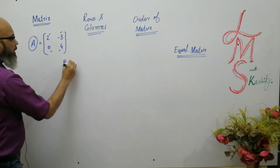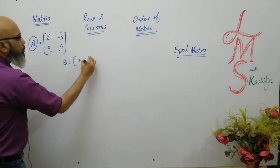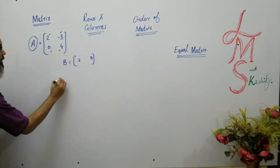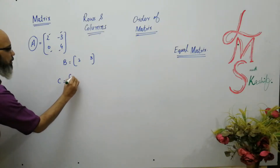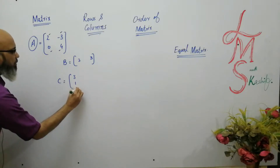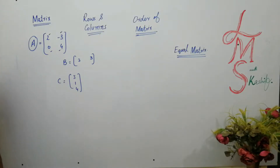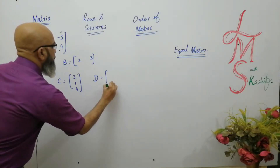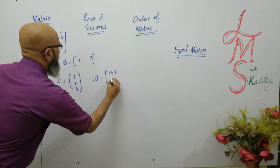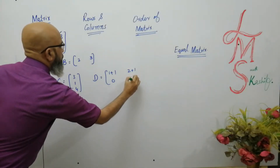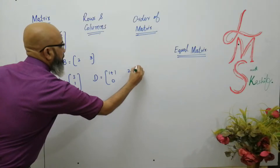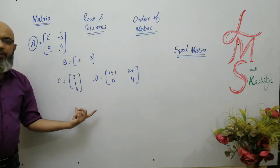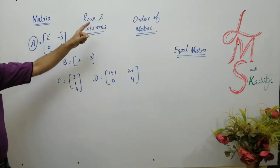Let's see some examples. Matrix B is equal to [2, 3] — this is also a matrix. Matrix C is equal to [3, 1, 4] — this is also a matrix. Matrix D is equal to [1+1, 0; 2+1, 4] — this is also a matrix. So these are different types of matrices.